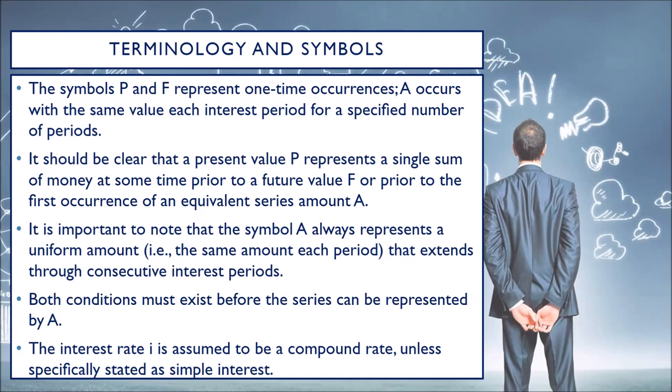A present value P represents a single sum of money at some time prior to a future value F, or prior to the first occurrence of an equivalent series amount A. The symbol A always represents a uniform amount — the same amount each period — that extends through consecutive interest periods. Both conditions must exist before the series can be represented by A. The interest rate I is assumed to be a compound rate unless specifically stated as simple interest.